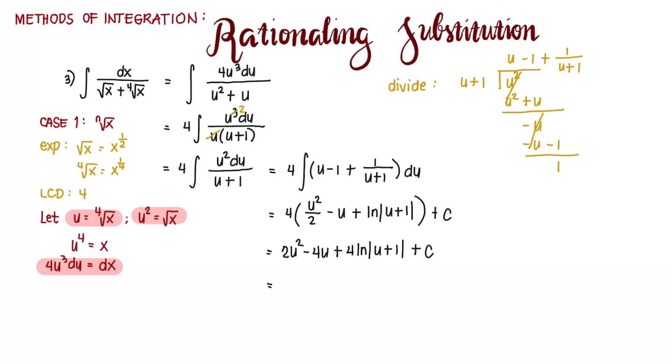So u squared, bringing it back to the original variable is the square root of x and u is the fourth root of x plus 4ln of the fourth root of x plus 1 plus c.